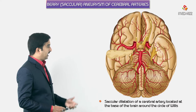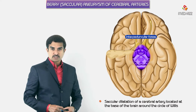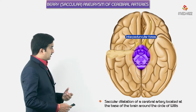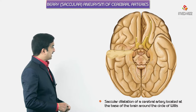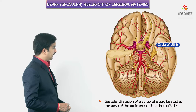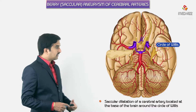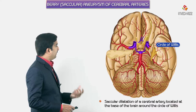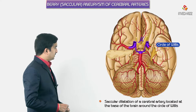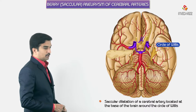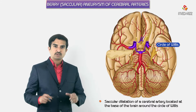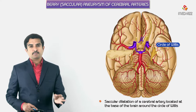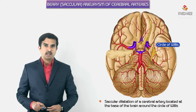We can see the base of the brain as well as the interpeduncular fossa. Surrounding the interpeduncular fossa is the circle of Willis, and at the circle of Willis any artery may be vulnerable to the development of a berry aneurysm.